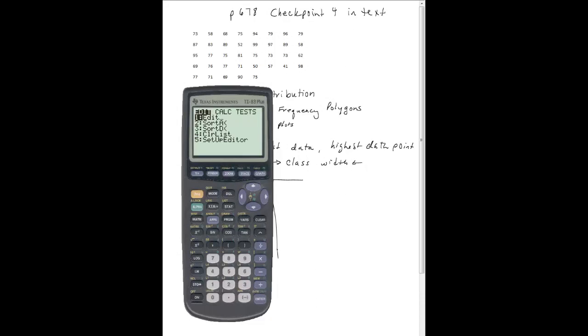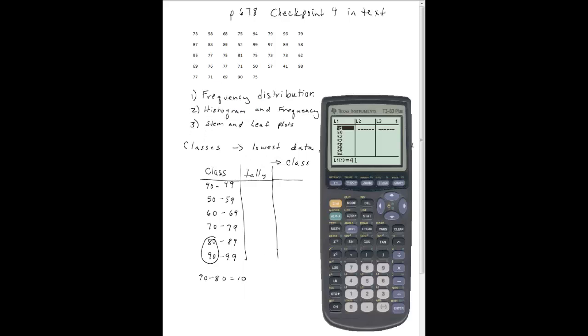Let's go back and look at my list. Again, stat, edit, and now my list is all in order. That makes it much easier to do the frequency chart. I see I have 1 in 40, I have 1, 2, 3, 4, 5 in the 50s, and so on.